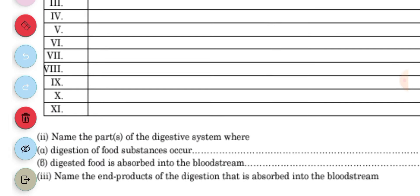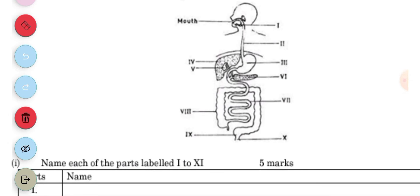Part II says, name the parts of the digestive system where digestion of food occurs. The digestion of food occurs in the mouth, in the stomach, in the duodenum which is the small intestine, and then the ileum as well.